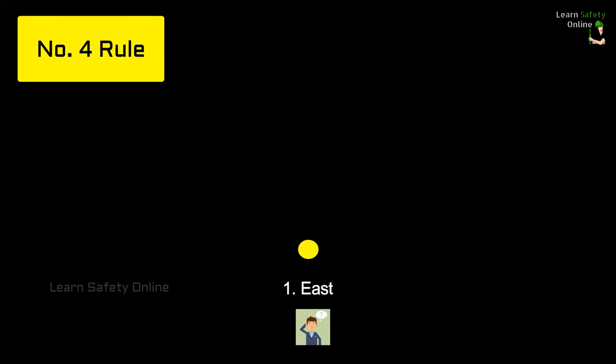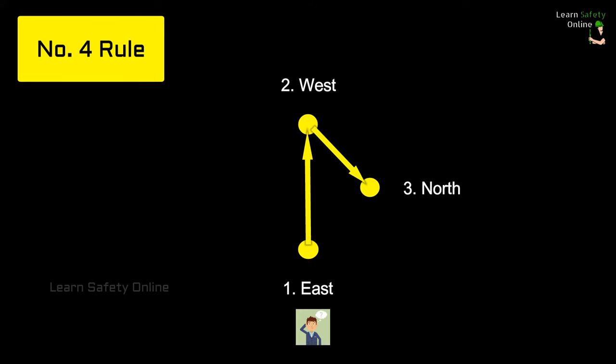Consider that you are standing facing east — that is direction number one, the sunrise direction. The opposite, number two, is west. Number three is north and number four is south. When you write a four, if you view it from the south side, it looks like a number four — that is why we call it the number four rule.